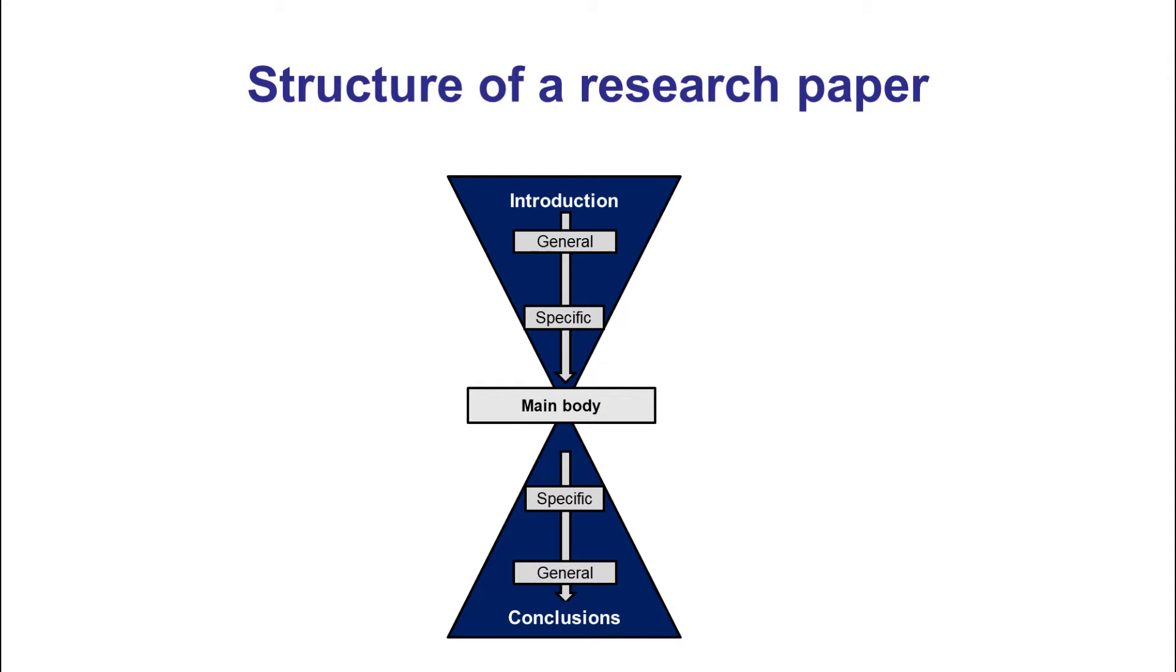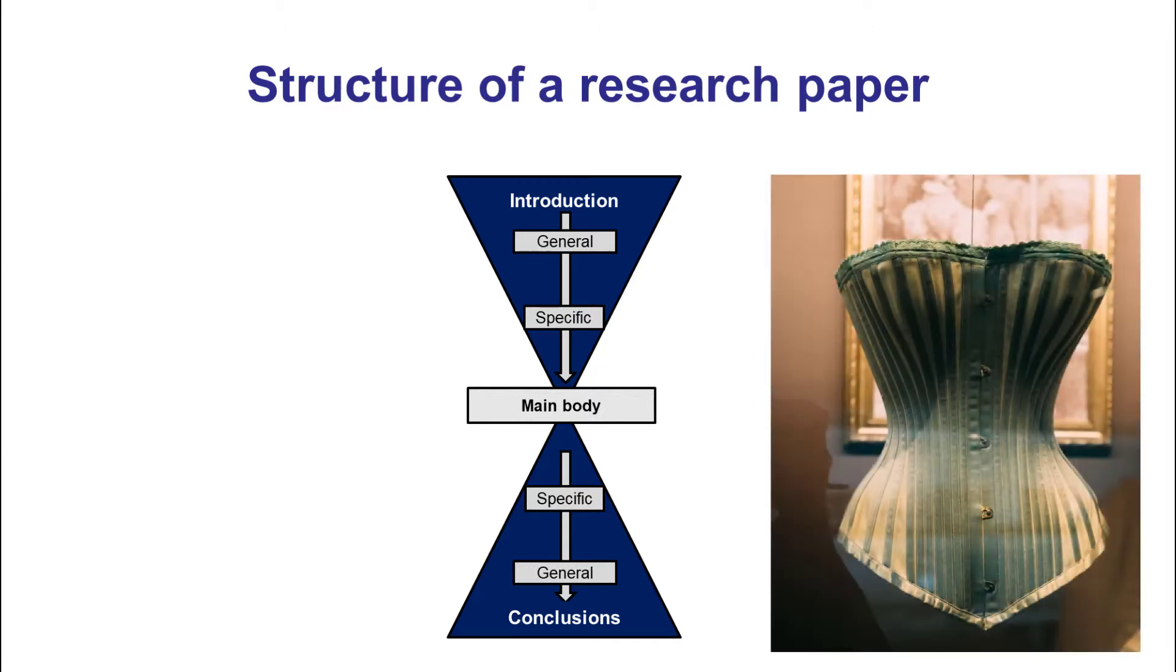I think it's important to have this background understanding of what a research paper is, what is its objective, and then, if we're clear about that, we can structure our article accordingly. Coming back to the analogy of a corset, I think that's extremely useful because that puts you into a certain frame and a certain structure that would be wise to follow.